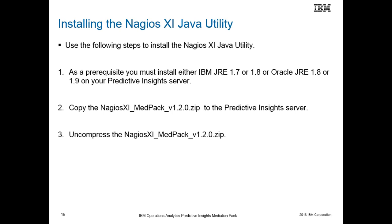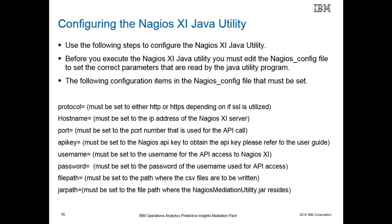This slide shows the steps needed to install the Nagios XI Java utility. Before you can use the Nagios Java utility, you must have installed the Java JRE on your Predictive Insights server where the Java utility will be installed. Note that you can use either IBM or Oracle JRE; the versions are shown on the slide. The first steps to install the Java utility are to download and unpack the Nagios XI Mediation Pack. The parameters used by the Nagios XI Java utility are located in a file called the Nagios config file.